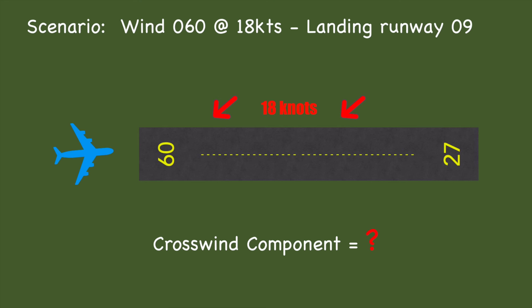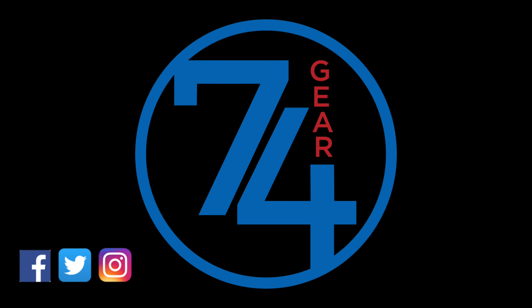Here's a scenario for you to solve yourself in the comments below. You're landing runway 9, wind is 060 at 18 knots. I made it 18 knots so you can get some real-world math practice. As I said earlier, take that 18, round it to 20, and when you get your crosswind component at the end, drop a knot or two — that'll give you a pretty good idea. Let me know in the comments what the crosswind component was and if this video was helpful. If you haven't joined the 74 crew, consider subscribing. Until then, keep the blue side up.